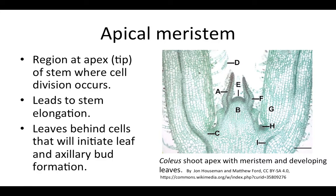Let's start by going over the structure of the apical meristem. The apical meristem is the region at the very apex, or the tip, of the stem. This is where cell division occurs. Because we get the addition of new cells in this region, it is going to lead to stem elongation.